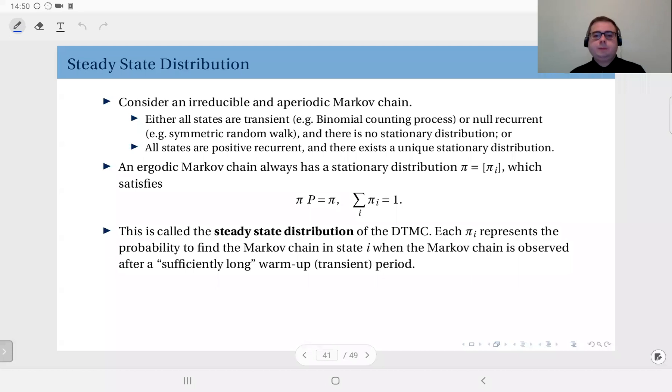Now consider an irreducible and aperiodic Markov chain. There are two possible scenarios here. One is either all states are transient or null recurrent, so that in the steady state the probability of observing them is zero. In fact, in this case there is no stationary distribution.